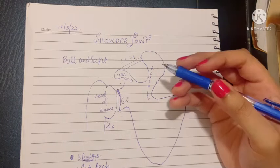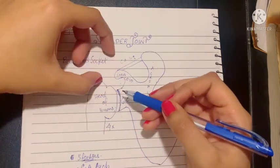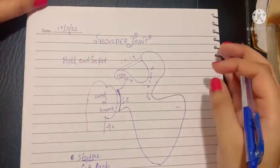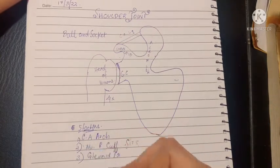Hence a certain amount of factors provide stability to the shoulder joint. Otherwise the humerus will be dislocated easily. So let's talk about those factors. There are about five factors in total.